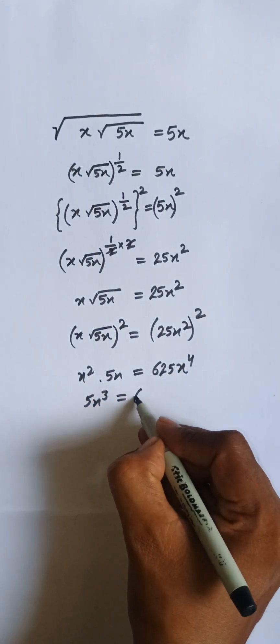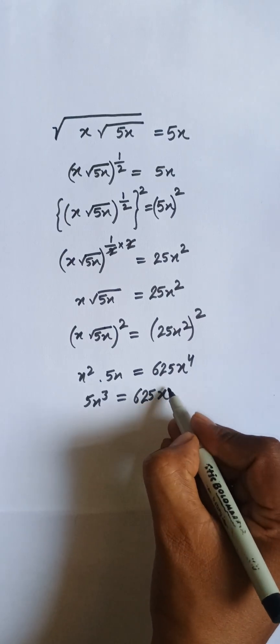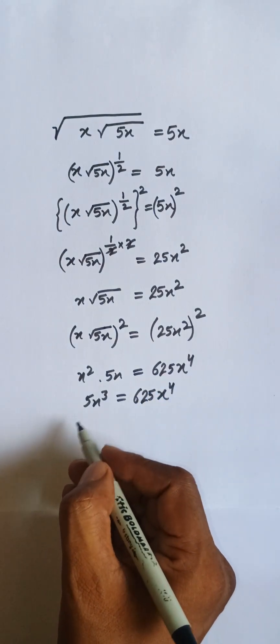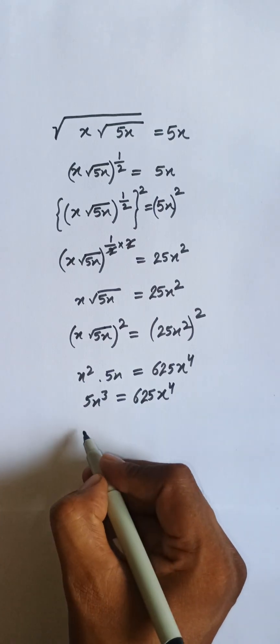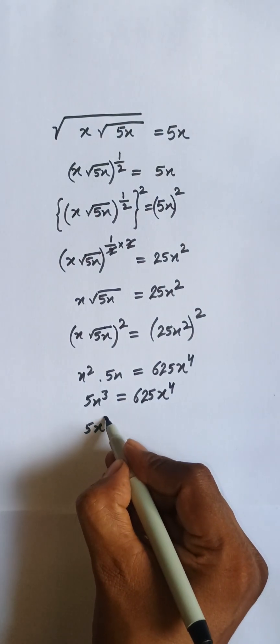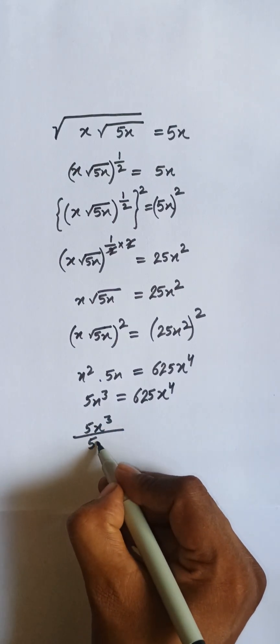and here 625x⁴. Both sides I am dividing by 5x³. So here, 5x³ divided by 5x³